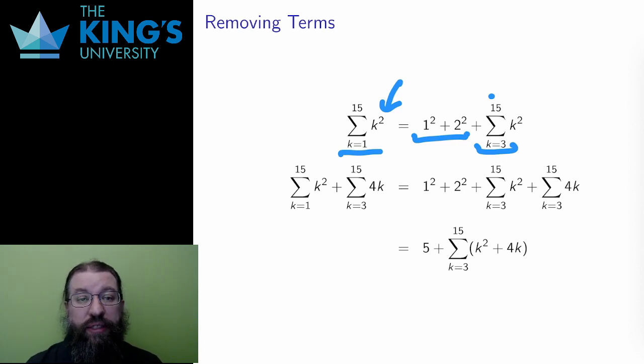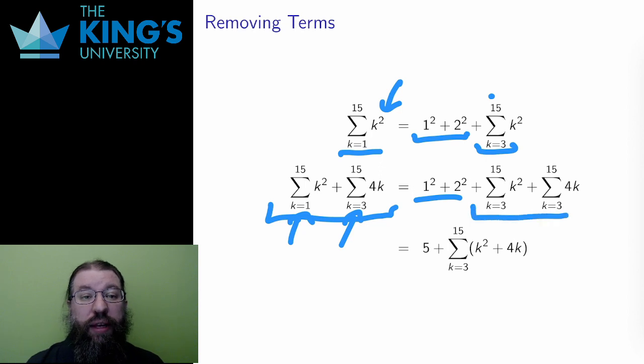This is useful for combining sums when the bounds don't match up. Say I want to combine these two sums. They have the same upper bound of 15, but the first starts at 1 and the second at 3. I can pull out the first two terms of the first sum, which leaves the remaining sigma notation starting at k equals 3, and then the two remaining sums have the same bounds and can be combined into one sum.